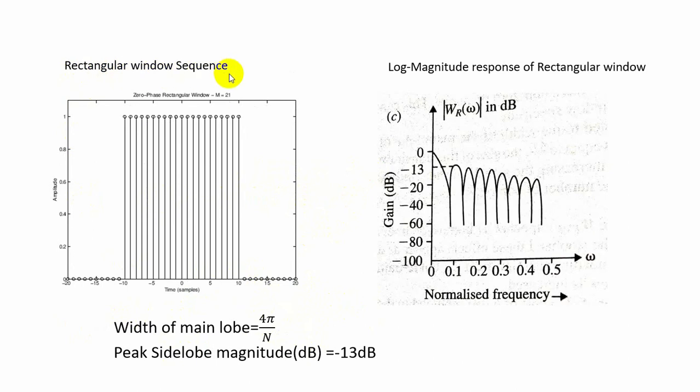The rectangular window sequence is represented like this for capital N is equal to 21. Here it is ranging from minus n-1 by 2 to n-1 by 2, that is from minus 10 to 10. In other regions the value will be equal to 0.